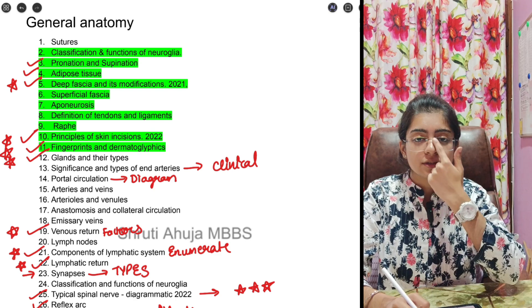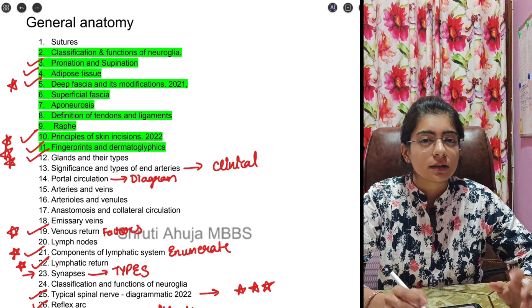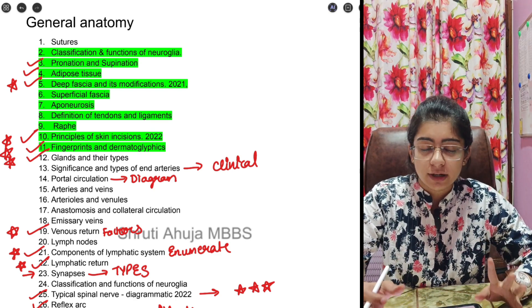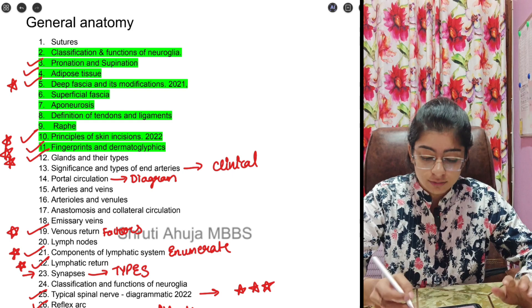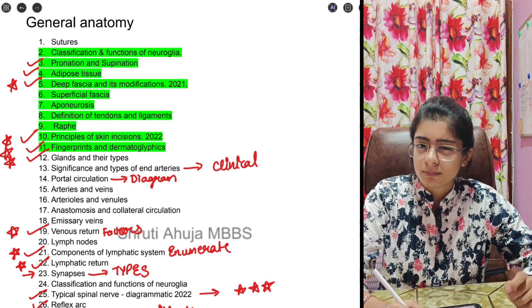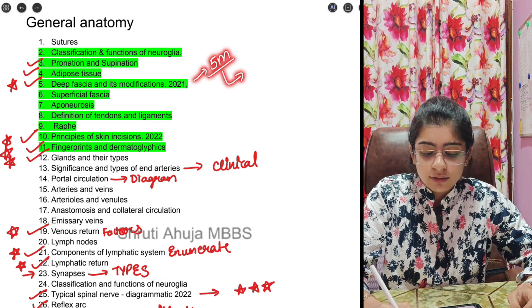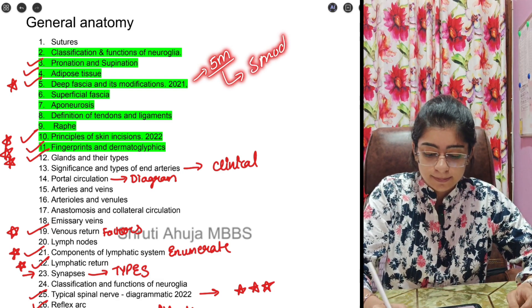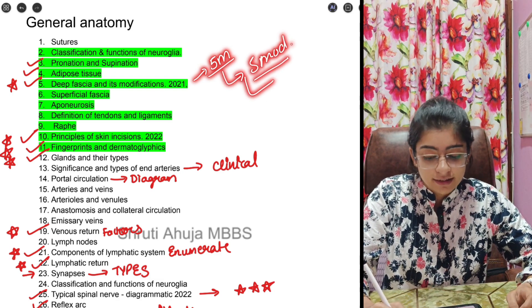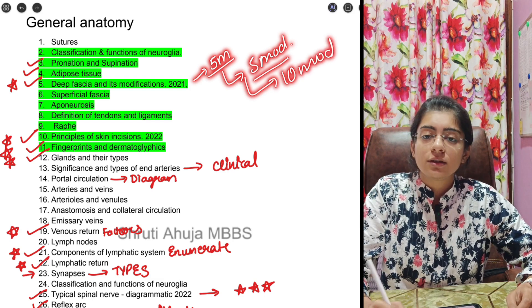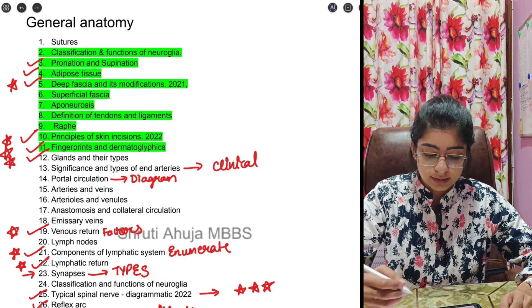Next comes deep fascia modifications. In this you can also add a diagram with each point if possible, if time allows. But what mistake usually people make is it comes as a 5 mark question and people write only 5 modifications, but you have to write 10 modifications then only you will get near to full marks in this question.